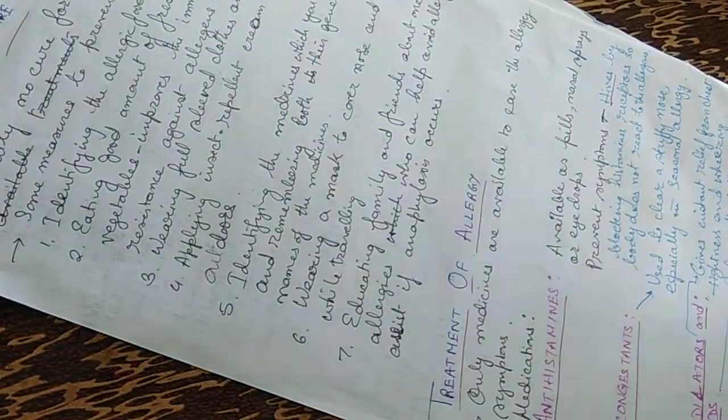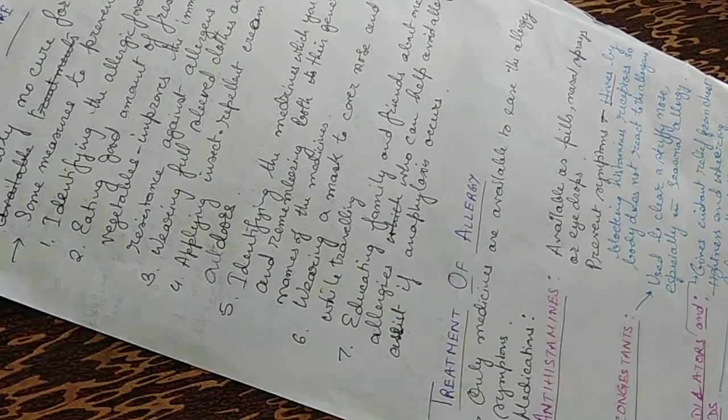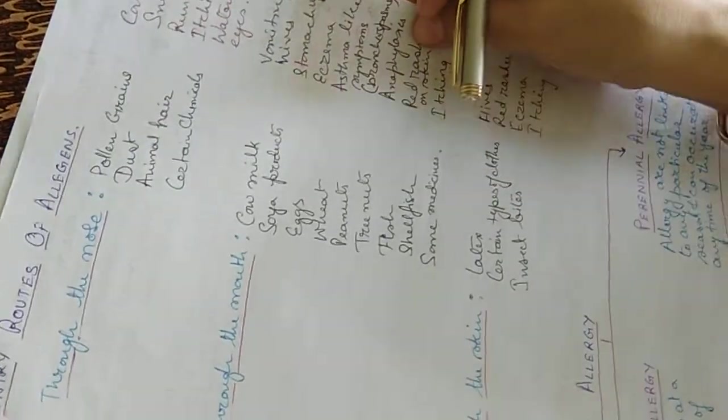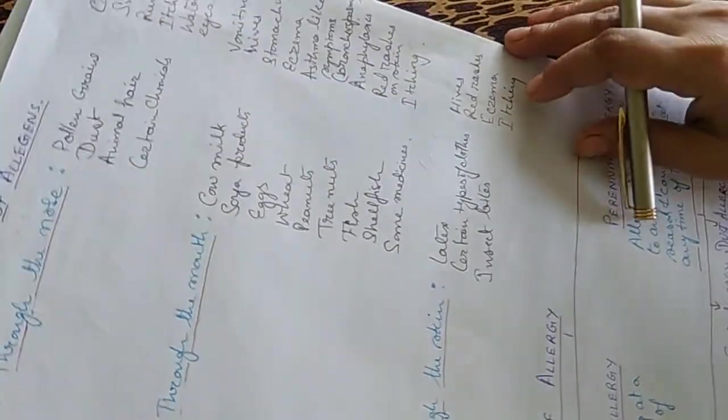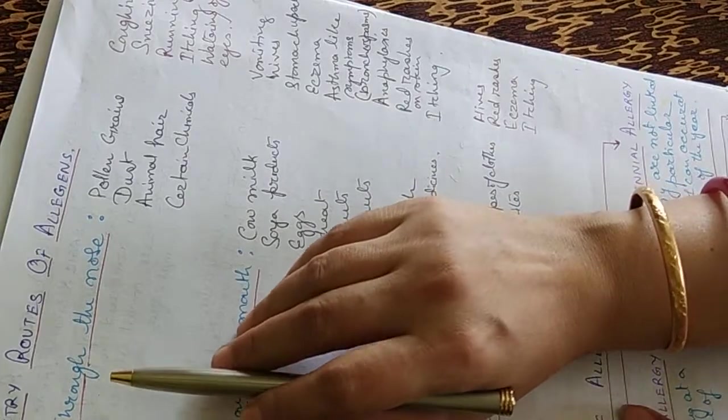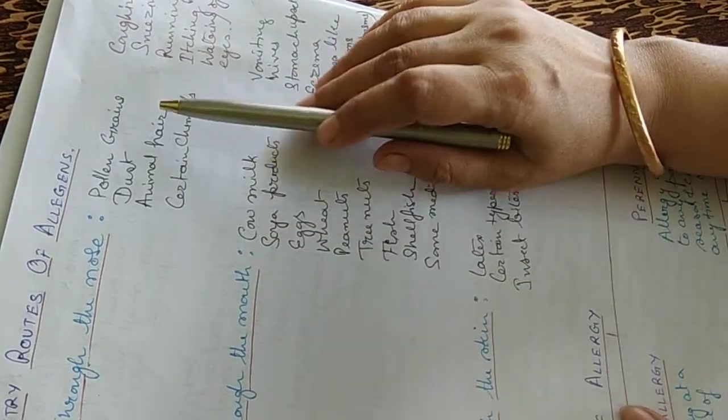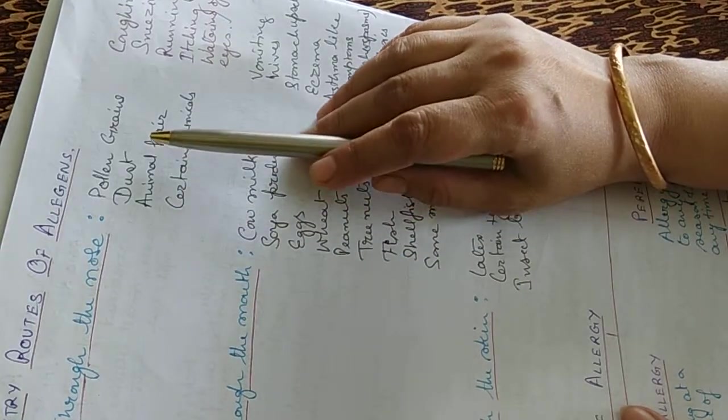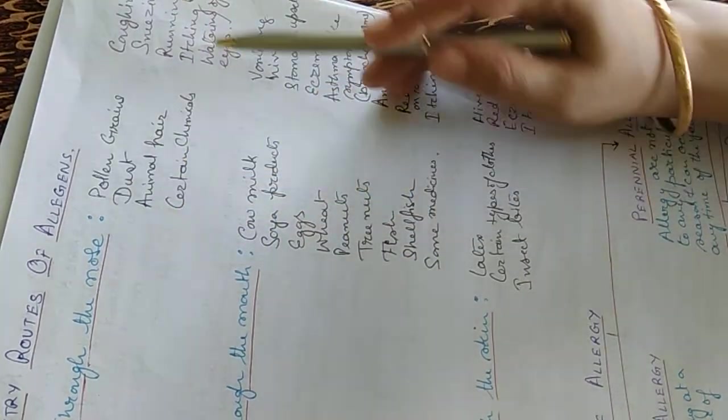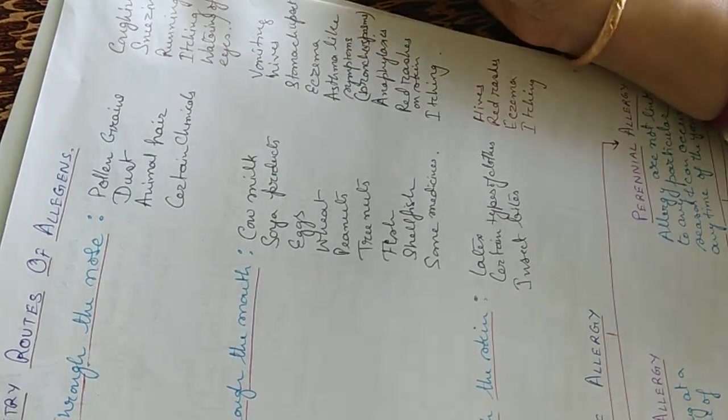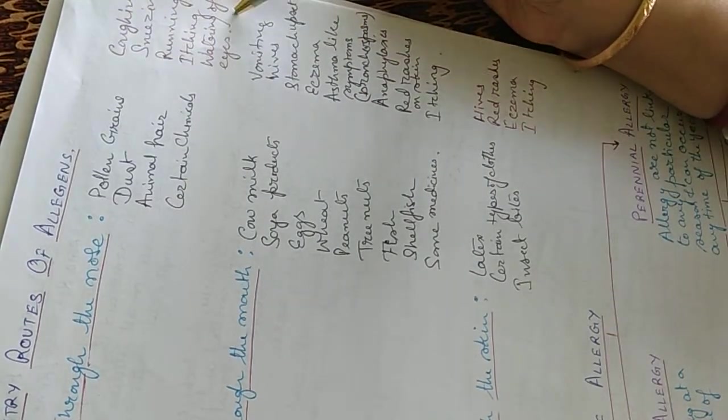How do these allergens enter into the body? These are the entry routes of the allergens. They enter through the nose, through the mouth and through the skin. First, the nose. They enter in the form of pollen grains, dust, animal hair or certain chemicals. They cause coughing, sneezing, runny nose, itching and watery eyes.